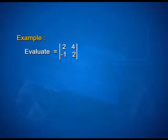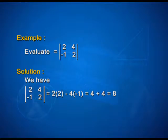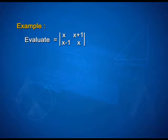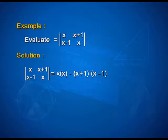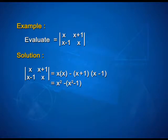Now let us take up some examples to understand how to evaluate determinants. First, evaluate determinant [2, 4; -1, 2]: we have 2*2 minus 4*(-1), which gives 4 + 4 = 8. Similarly, evaluate determinant [x, x+1; x-1, x]: we compute x*x minus (x+1)*(x-1) = x^2 minus (x^2 - 1) = x^2 - x^2 + 1 = 1.